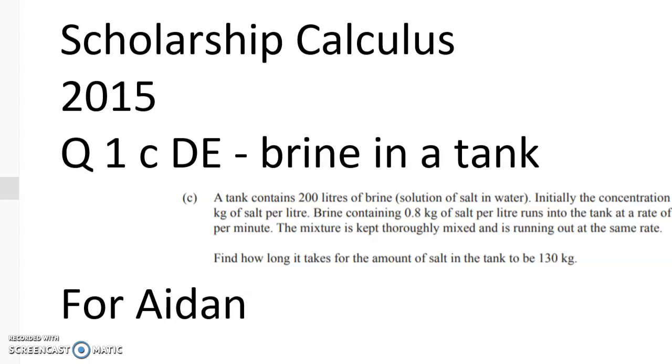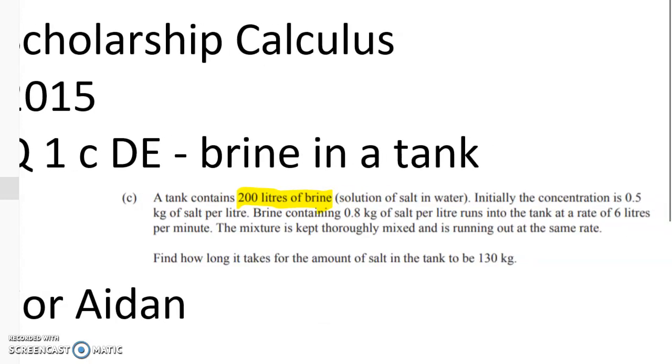We've got a tank that contains 200 litres of brine, and initially the concentration is 0.5 kilograms of salt per litre, and then we've got brine coming into the tank. So brine containing 0.8 kilograms of salt per litre runs into the tank at a rate of 6 litres per minute, but the mixture is kept thoroughly mixed, and it's running out at the same rate. So we have to figure out how long it takes for the amount of salt in the tank to be 130 kilograms.